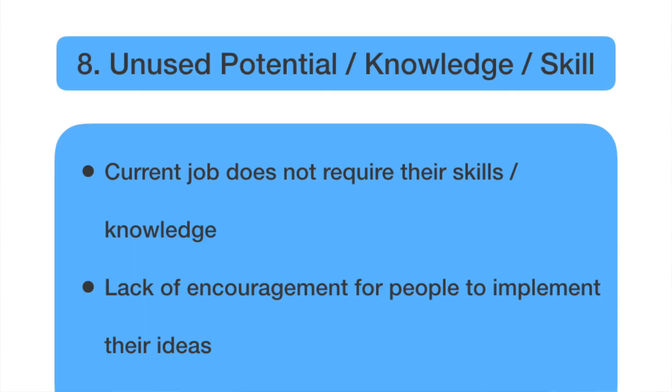These are the seven wastes. Recently, an eighth waste has been added: unused potential, or the unused knowledge of people in the company. For example, a new person working on a machine may have skills in creating presentations or Excel sheets, and strong analytical ability, but is not using those skills in their current job. This is a waste, and the question is how we can tap this unused potential for the betterment of the organization.